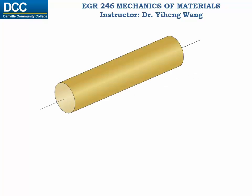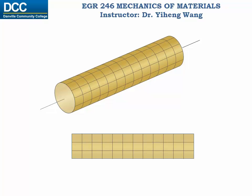Here is a circular solid shaft. From the side it looks like a rectangle. To help visualize the deformation later, let me put grids on it. Notice each grid can be considered as a rectangle with all four right angles, 90 degree angles. Also let me draw a line here to indicate the initial position of this point on the surface of this shaft.